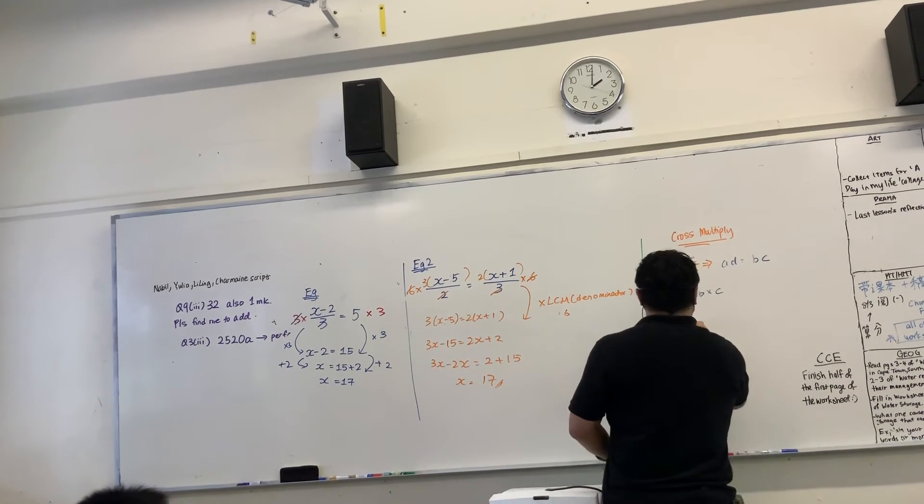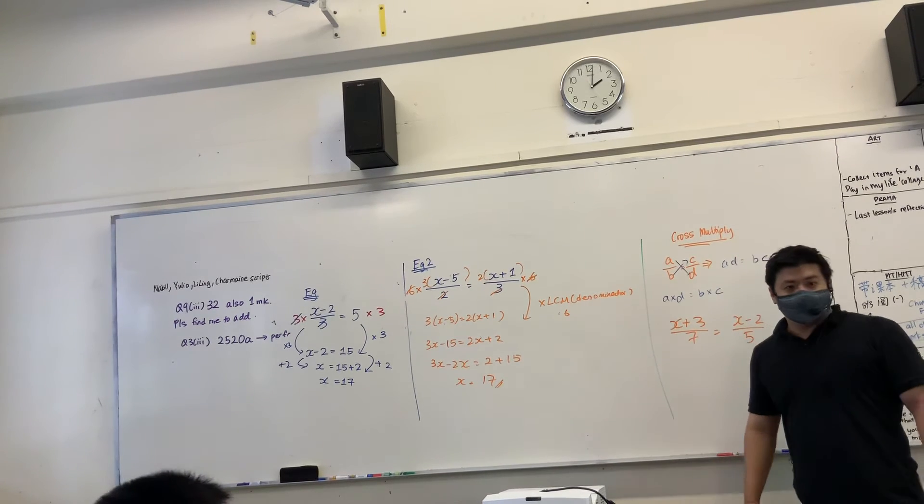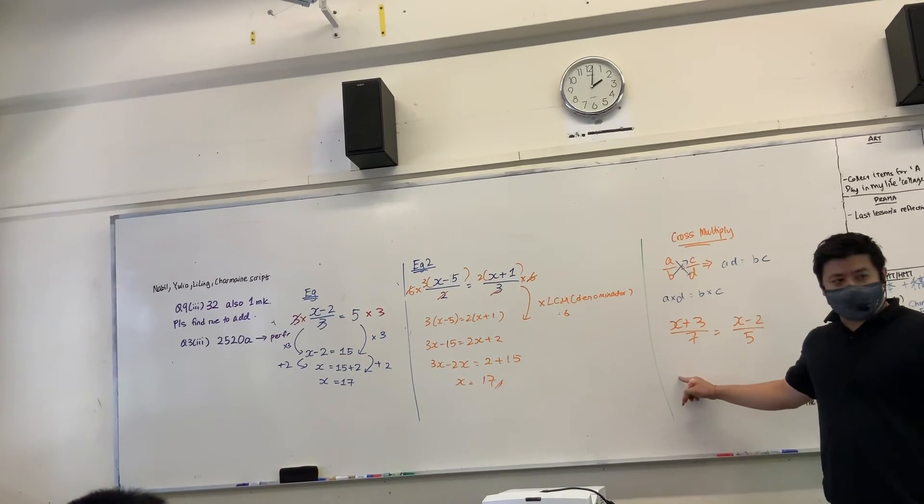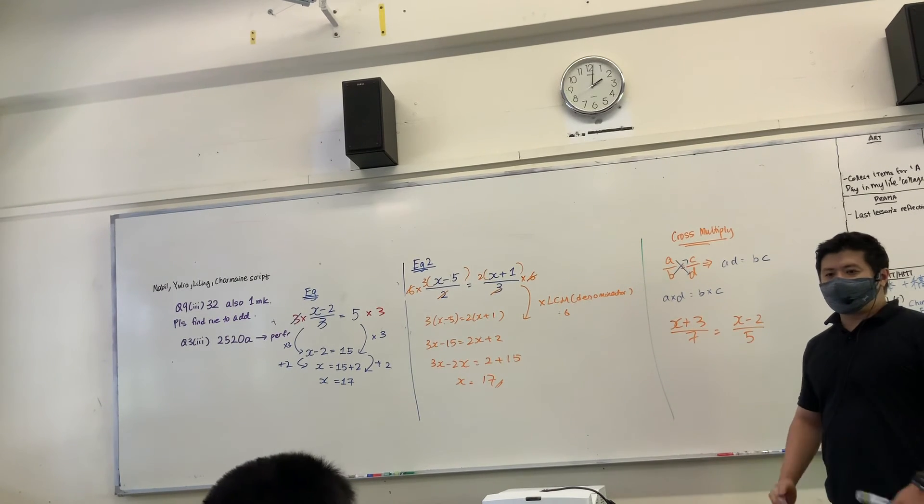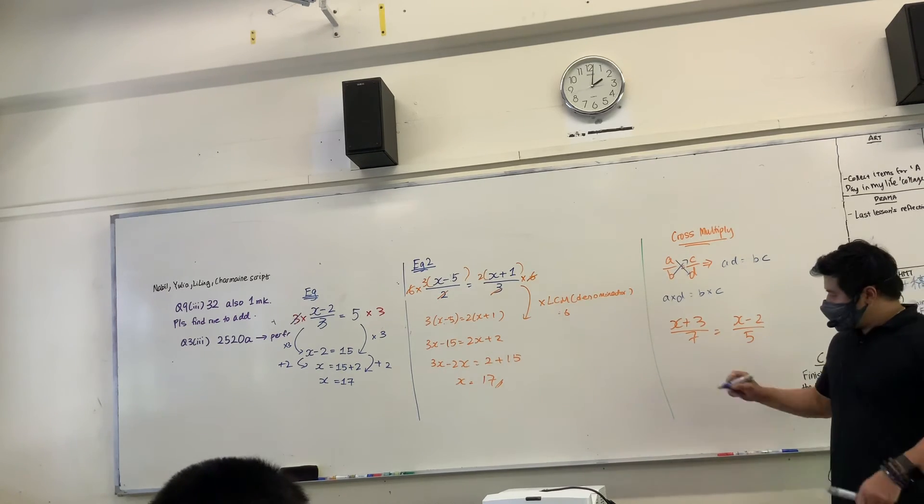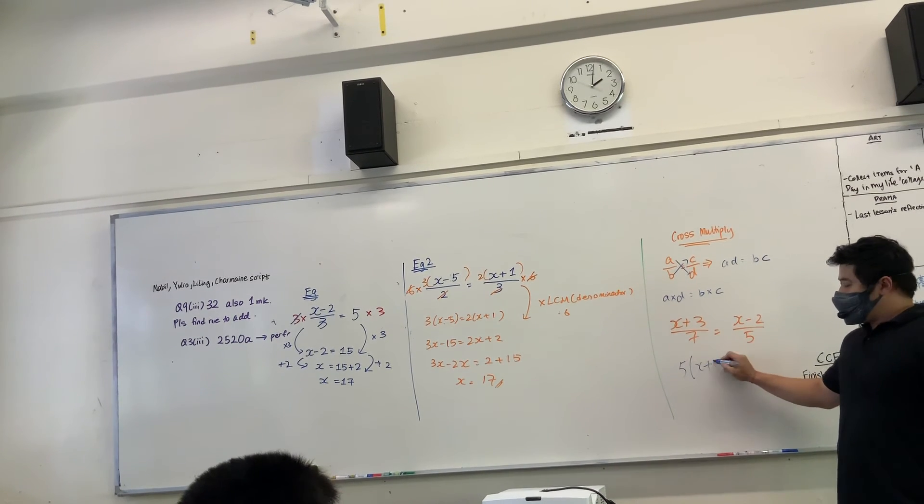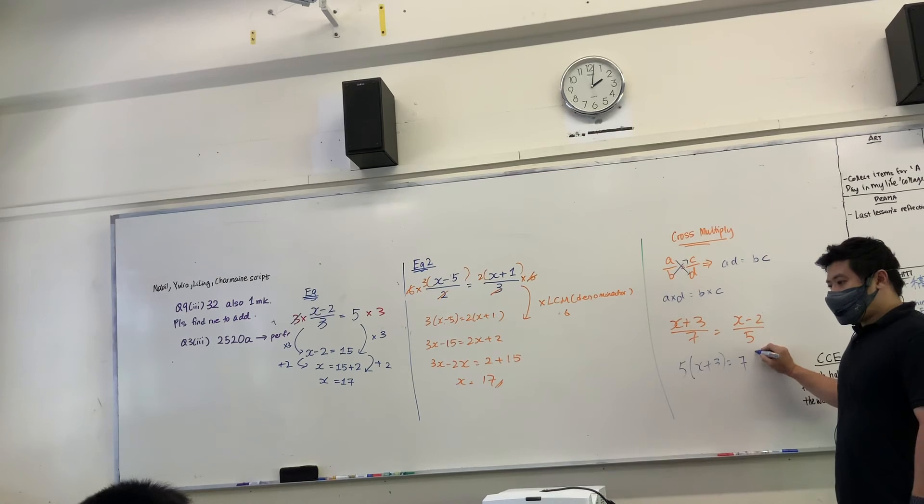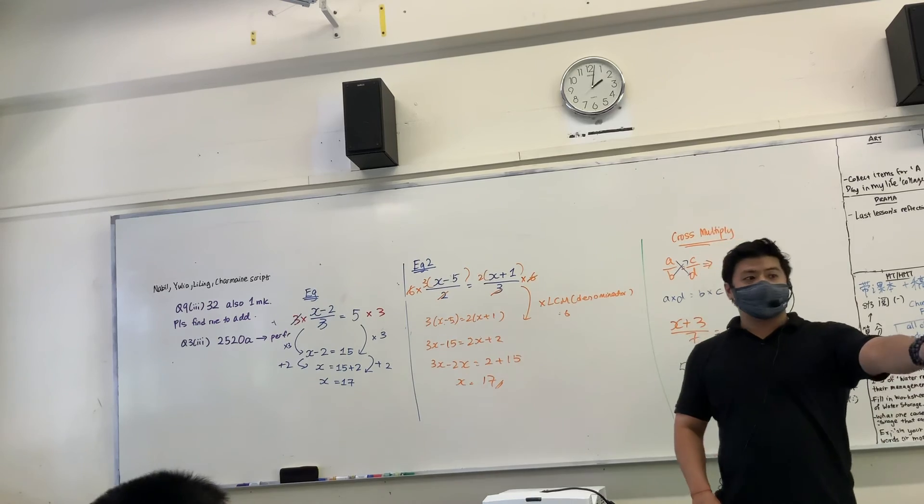So very quickly, I'm going to do a quick test. X plus 3 over 7 equals X minus 2 over 5. Next! Equals! Next person I want to ask, Ignatius. Okay, you'll stay behind, I'll ask you again.